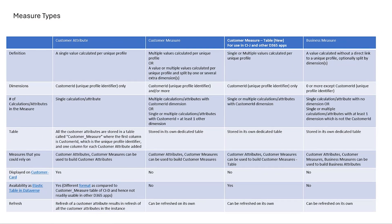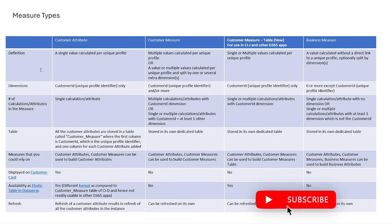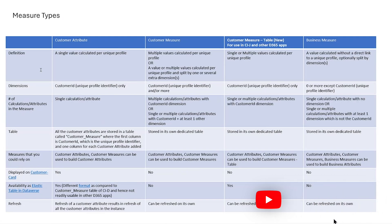As we've seen, there are four kinds of measures. In summary, customer attributes provide individual customer insights, customer measures offer deeper behavior analysis, and business measures track overall business performance. Choosing the right measure type depends on the specific questions you want to answer, the level of detail you need, and the customer use case you want to resolve. Thank you.